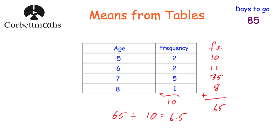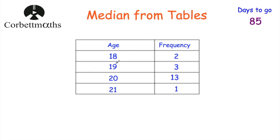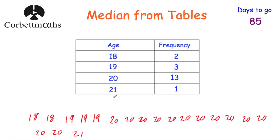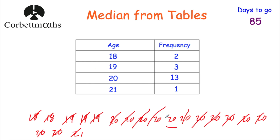Next we're going to look at how to find the median from a frequency table. We've got a new table with ages 18, 19, 20, and 21 — two 18-year-olds, three 19-year-olds, thirteen 20-year-olds, and one 21-year-old. One approach is to write the full list out and cross off the smallest and biggest values until you're left with the middle value, which gives a median of 20. However, I'd only recommend this if the frequencies are very small.